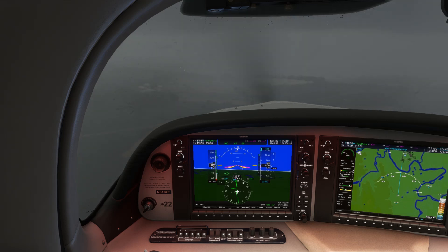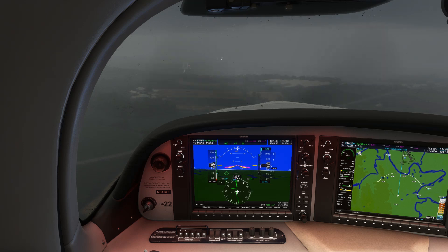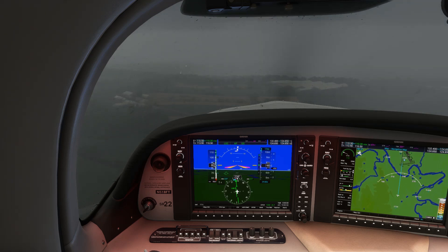A precision approach, like an ILS, is designed to get you closer to the ground before gaining sight of the runway and landing than a non-precision approach like a localizer only will.